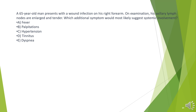A 65-year-old man presents with a wound infection on his right forearm. On examination, his axillary lymph nodes are enlarged and tender. Which additional symptom would most likely suggest systemic involvement? A. Fever. B. Palpitations. C. Hypertension. D. Tinnitus. E. Dyspnea.